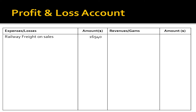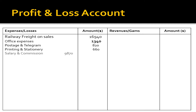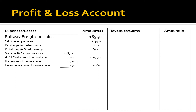On the debit (expenses) side of the P&L account: railway freight on sales $16,940; office expenses $1,340; postage and telegram $820; printing and stationery $660; salary and commission $9,870 plus outstanding salary $570, totalling $10,440. For rates and insurance $1,300, we subtract unexpired insurance $240 — the unexpired insurance is given in point 7 of the adjustments.